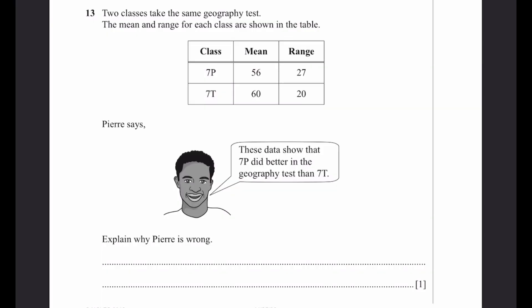Question 13. Two classes take the same geography test. The mean and range for each class are shown. Pierre says these data show that 7P did better in the geography test than 7T. Explain why Pierre is wrong. For 7P the mean is 56, and for 7T it is 60. If the mean is 60, that's greater than 56. That means the students overall did a bit better in 7T than 7P. Pierre is wrong because the mean of class 7T is greater than the mean of class 7P. That's the answer.